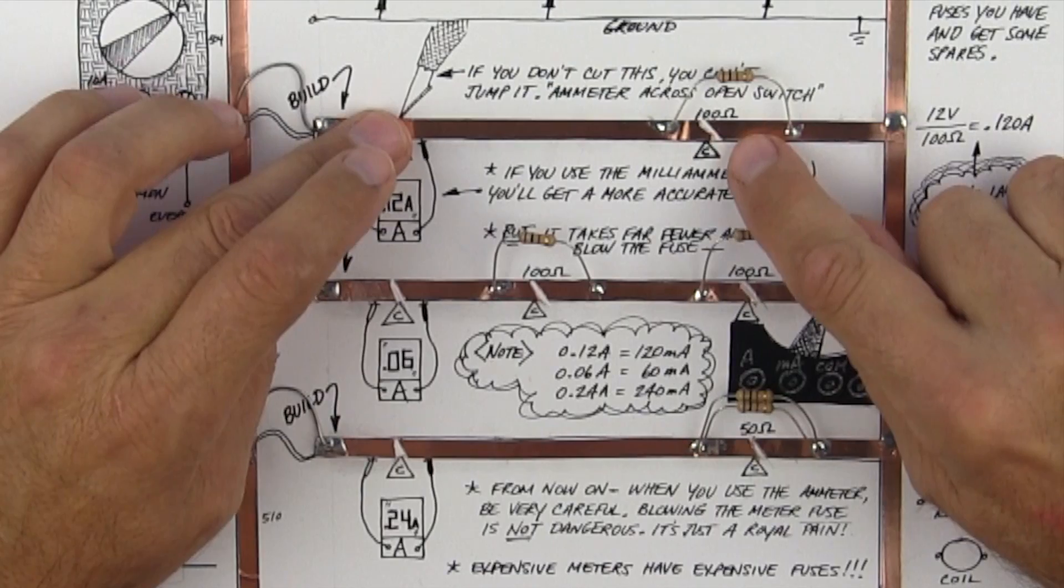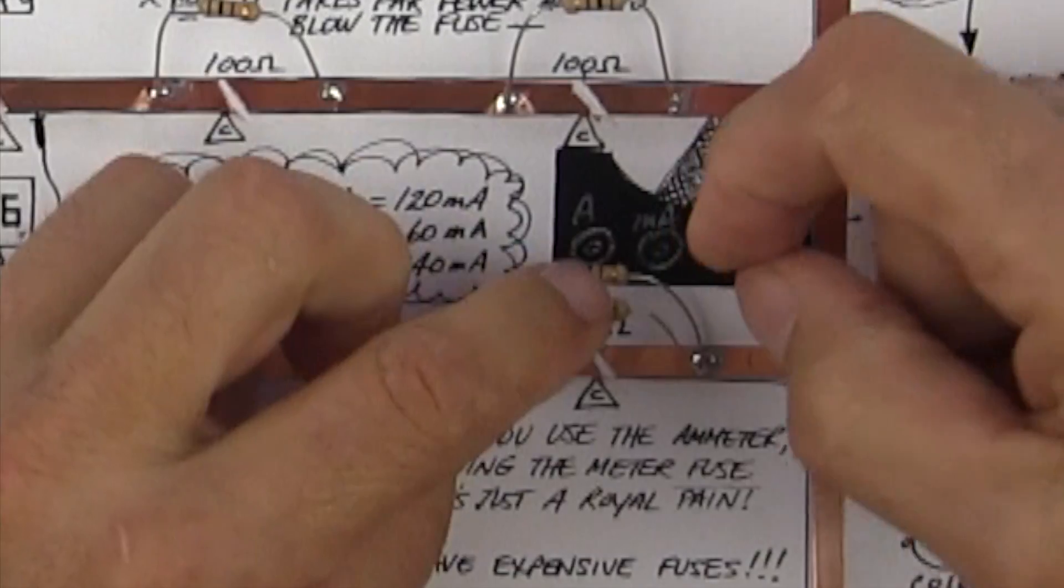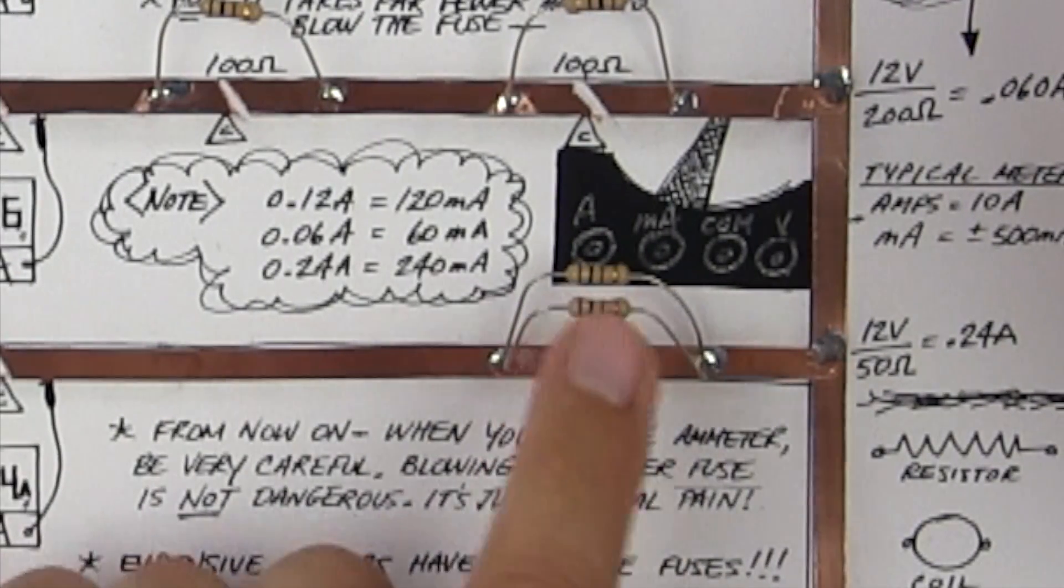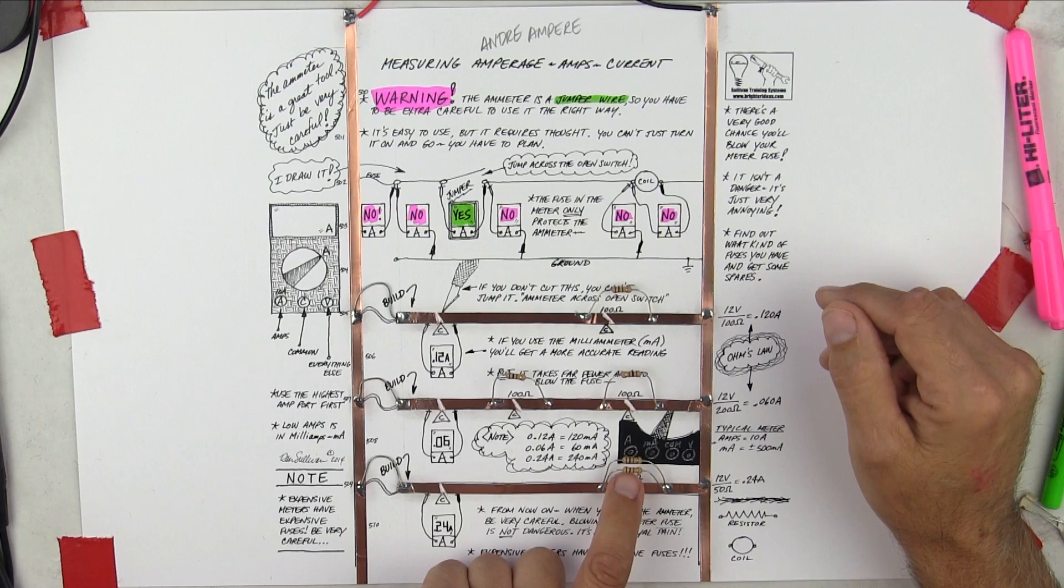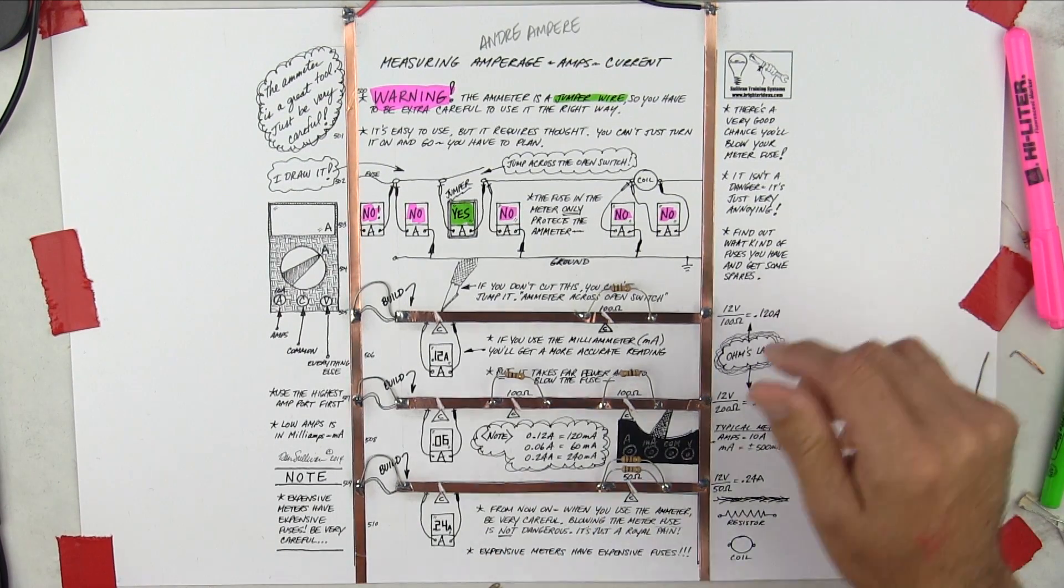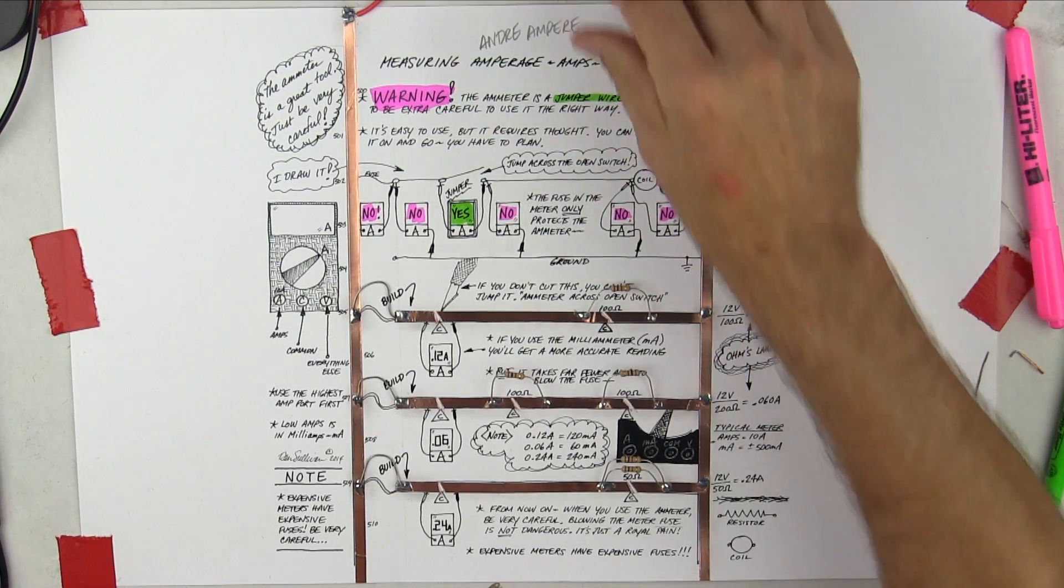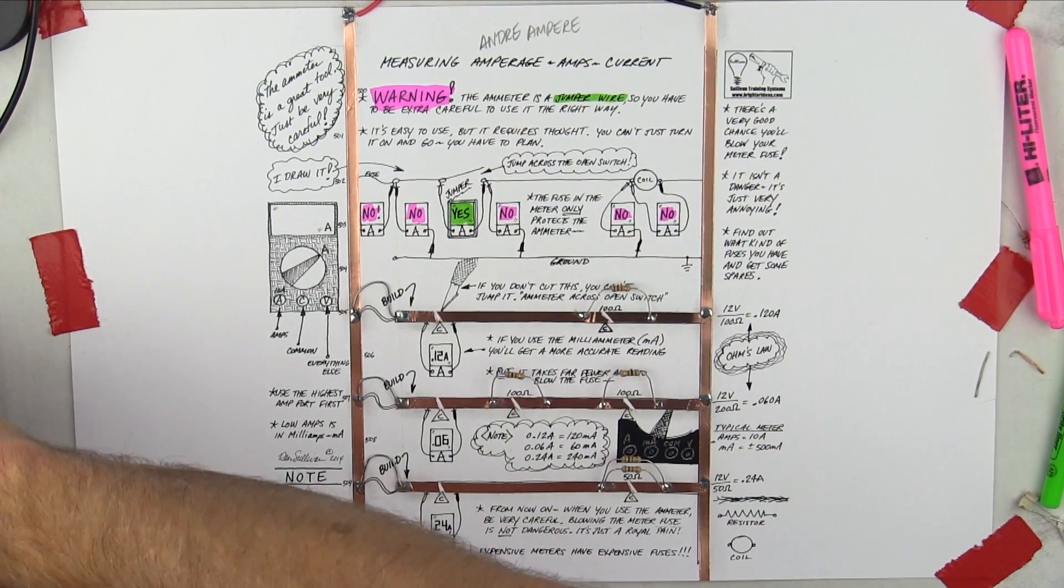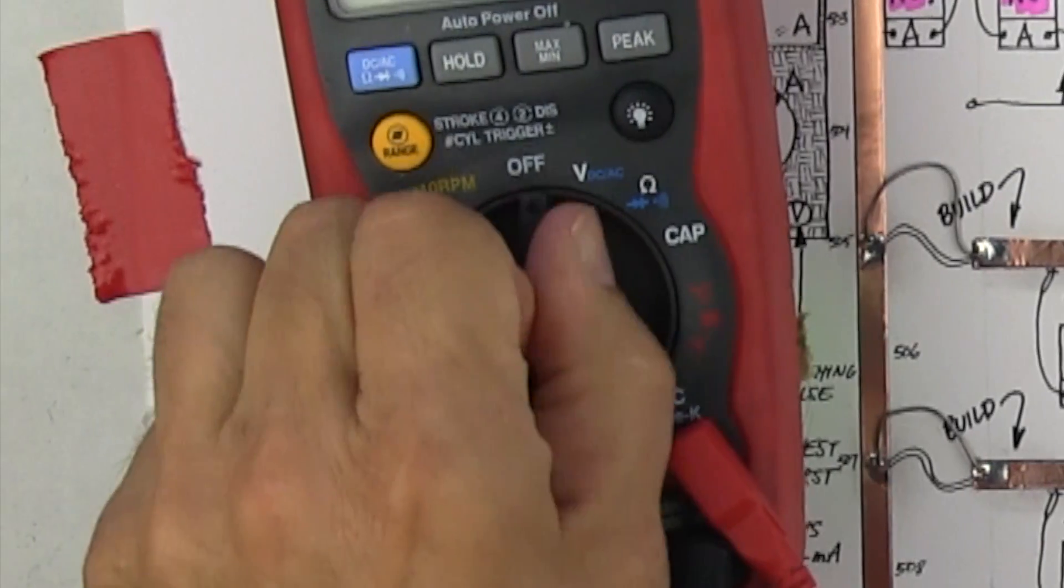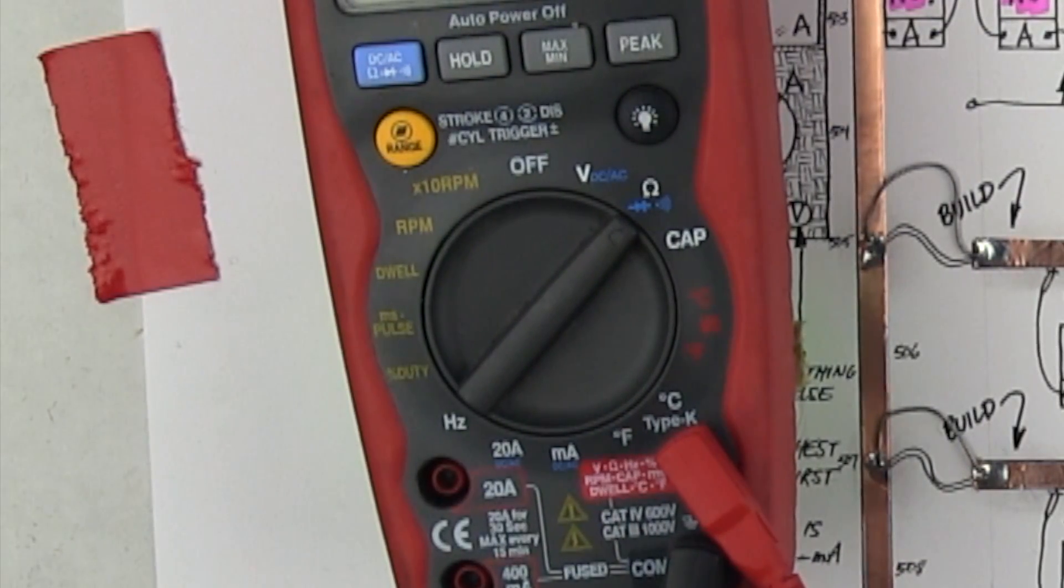So each of these is 100 ohms. And what I did here was I put two 100s in parallel just to reinforce what we did in card four. But two 100s in parallel will give you 50. So the first thing I'm going to do is I got my battery unplugged, which is not a bad thing to do with the ohm meter. And I will turn the meter on ohms like that. Make sure you can see it. It's pretty clear.